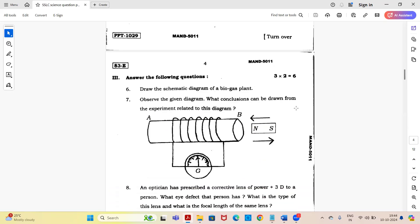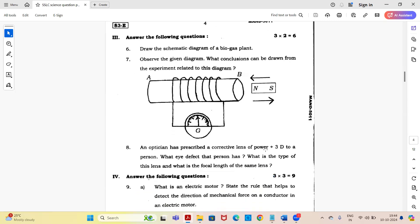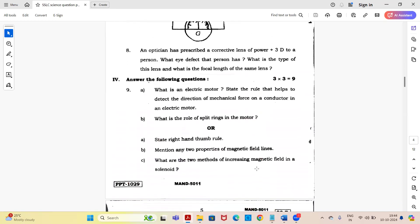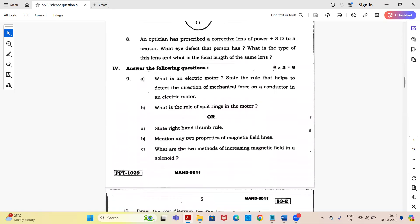Observe the given diagram. What conclusions can be drawn from the experiment related to this diagram? Next question: an optician has prescribed a corrective lens of power plus 3D to a person. What eye defect does the person have? What is the type of this lens and what is the focal length of this lens?